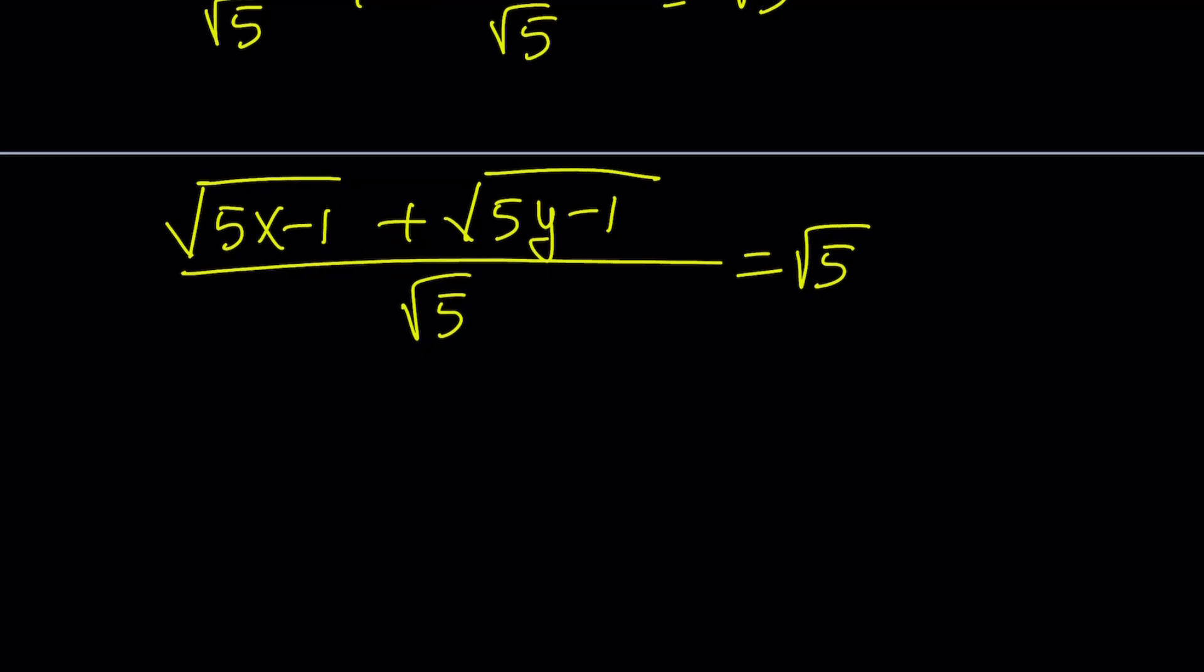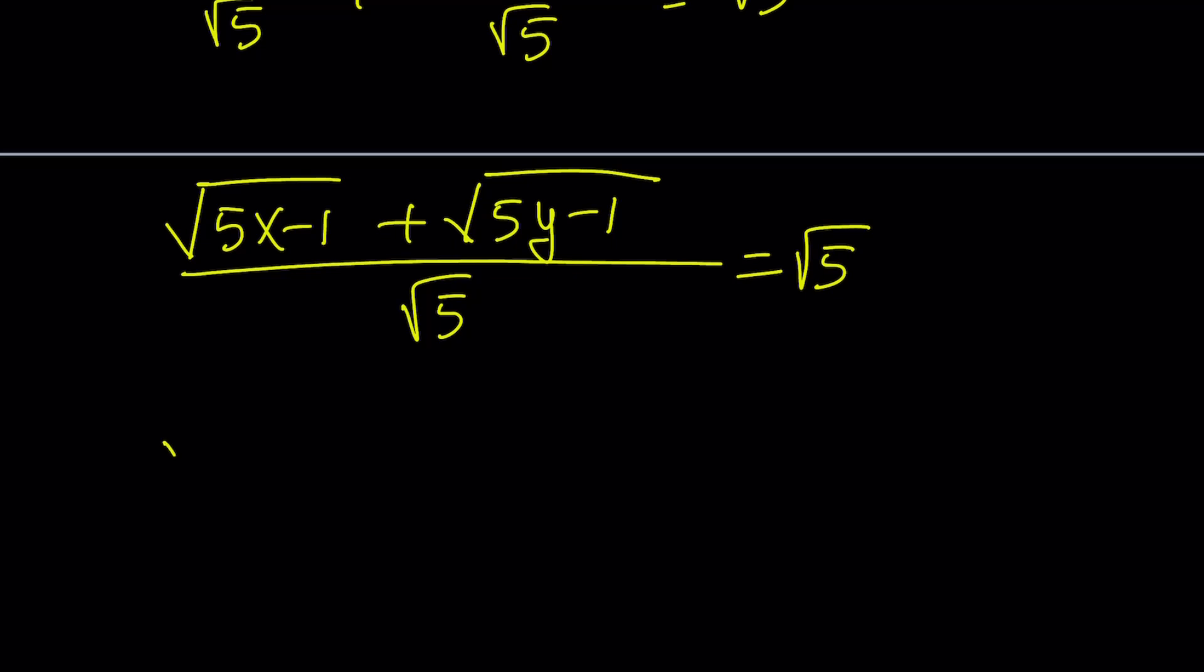Now, at this point, it makes sense to cross-multiply and isolate the radicals on the left-hand side. So this gives us the square root of 5x minus 1 plus the square root of 5y minus 1 equals square root of 5 multiplied by itself. And that is going to equal a positive 5. Great.